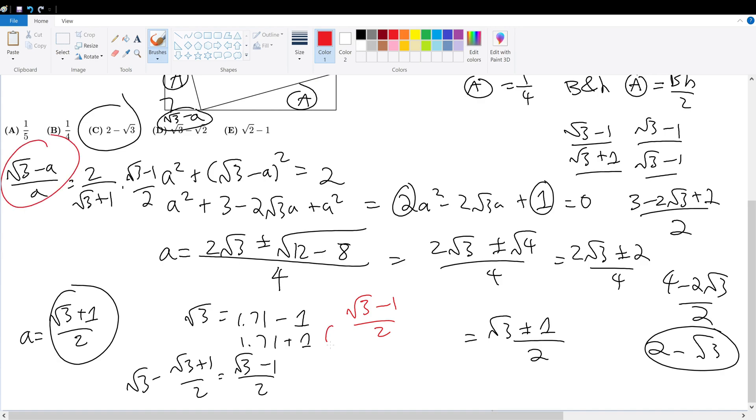But A just now becomes root 3 minus 1 over 2, so that becomes root 3 minus root 3 minus 1, so that's plus 1 over 2. This becomes root 3 plus 1 over 2 times 2 over root 3 minus 1, which is root 3 plus 1 over root 3 minus 1. Multiply by the conjugate, you get 3 minus 1, and that becomes 3 plus 2 root 3 plus 1, which gives you 4 plus 2 root 3 over 2, which means we get 2 plus root 3 as our answer.